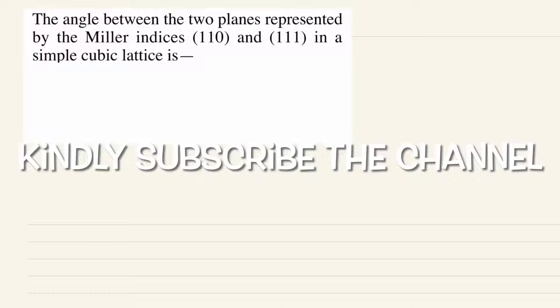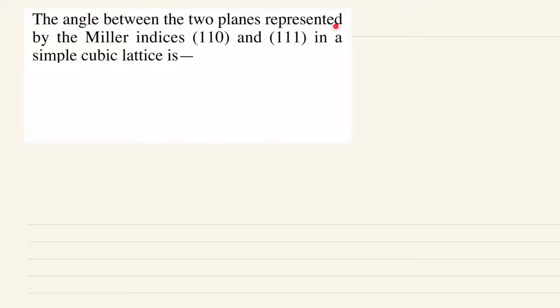Hello everyone, let's discuss this problem. The angle between the two planes represented by the Miller indices 110 and 111 in a simple cubic lattice. So we have to simply find the angle between these two planes having the Miller indices of 110 and 111.